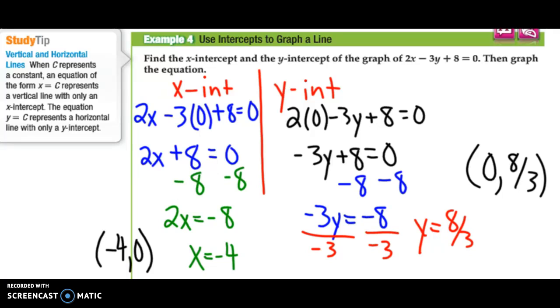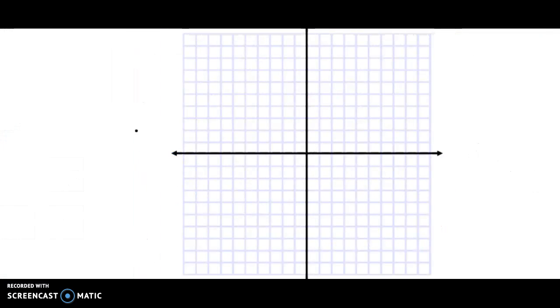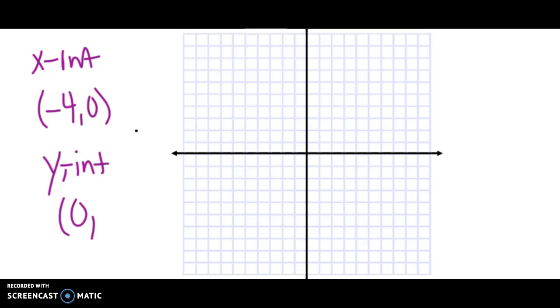I have my two intercepts, and now I can use them to graph. My x-intercept is the point negative 4, 0. The y-intercept is the point 0, 8 thirds. I go right to my graph and put those on. Negative 4, 0 is going to be right here, and 0, 8 thirds - well, 8 thirds is almost 3, pretty close to it, so right there. Now I have two points, and we said that between any two points, there is exactly one line between them. So there's my graph. All I did to graph it is put 0 in for x, 0 in for y, found my intercepts, and then connected the dots.